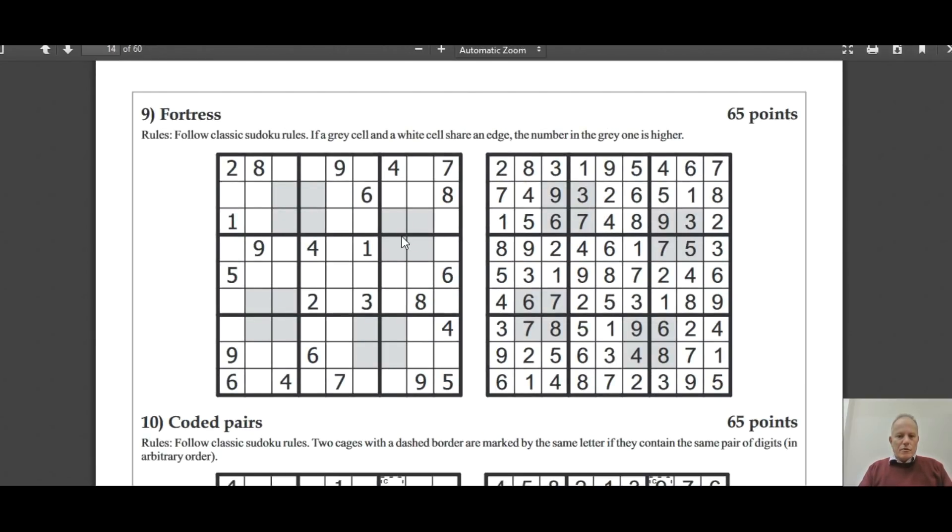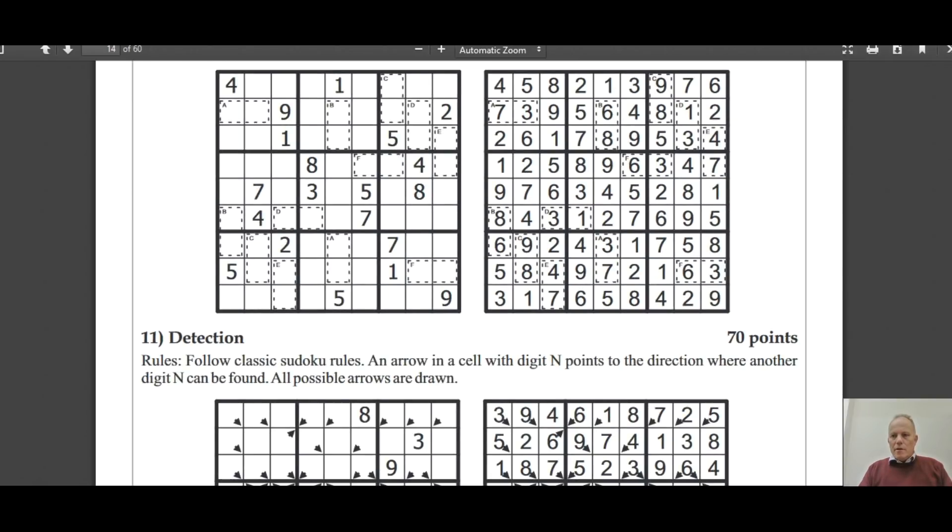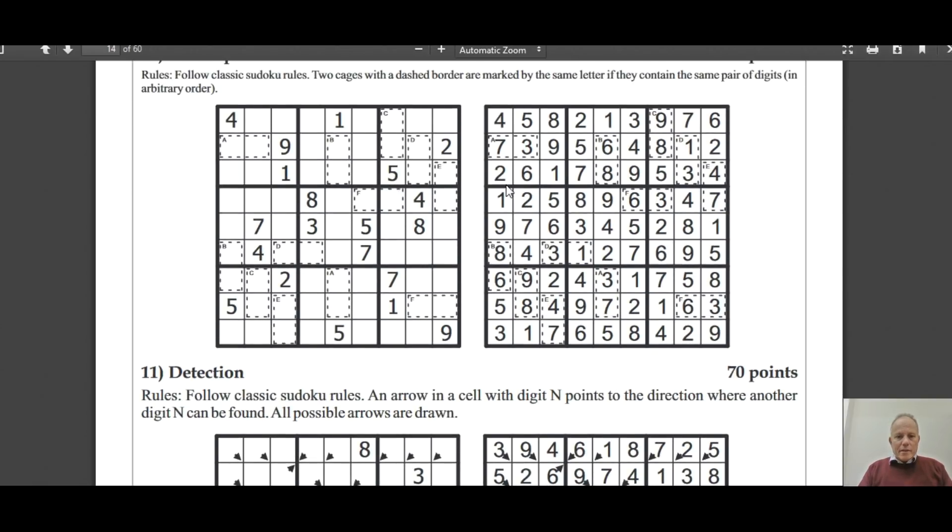Fortress, which again we are familiar with. Any gray and white cell next to each other, the gray cell must be bigger. So it's kind of implying that the gray block is a fortress holding it out against smaller numbers around it. Coded Pairs - quite like this one oddly. In the cage A, it must be the same two numbers in some order as in the other cage A. So information you get in one box suddenly helps you in another box in a completely different part of the grid.